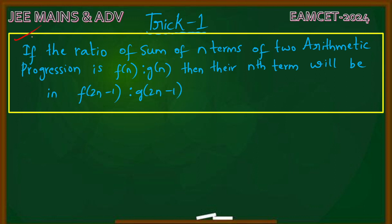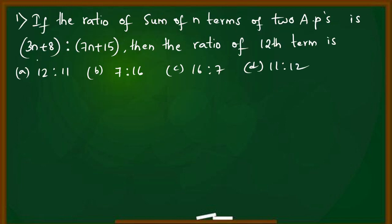Trick number one: If the ratio of sum of n terms of two arithmetic progressions is f(n) to g(n), then their nth term will be in the ratio f(2n-1) to g(2n-1). This is the formula we will use.